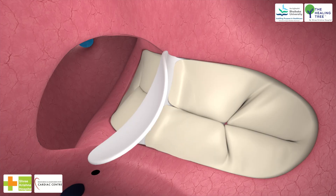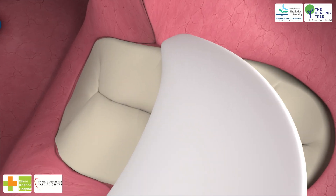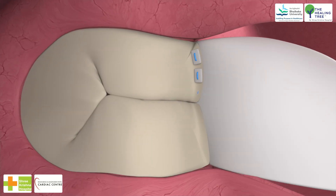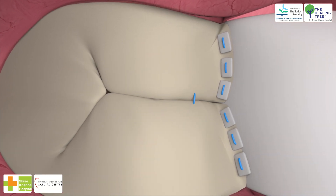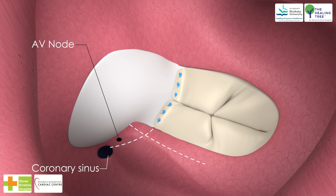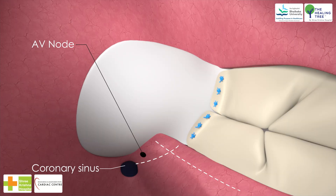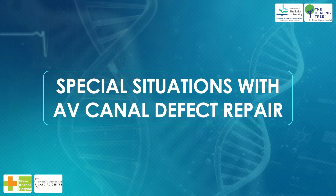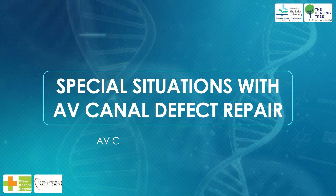The rest of the ventricular septum lies immediately underneath the AV valve leaflets; there may be restrictive ventricular communications in this region necessitating application of the Australian technique as used for complete AV canal. If the only ventricular communication in a transitional AV canal is at the level of the cleft, the defect can be closed with a single pledgeted horizontal mattress suture. The remainder of the repair is as for primum ASD closure, placing the coronary sinus on the left atrial side of the patch.